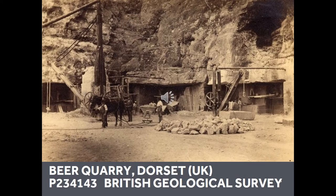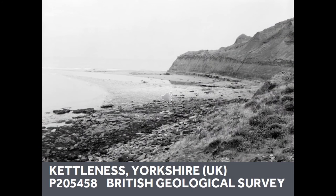Quarries can be hidden, like the stone mines at Beer, also in the south-west of England. Here, the large chambers where stone has been removed since the Roman period are underground. They are reached by narrow adits and tunnels. Jet has been a much valued stone since the Neolithic. In Britain, it is found in the sea cliffs of north-east England. Unlike quarry pits and underground chambers, it is much harder to identify where jet was taken from. The locations are more scattered and ephemeral, destroyed as the sea changes the shoreline.